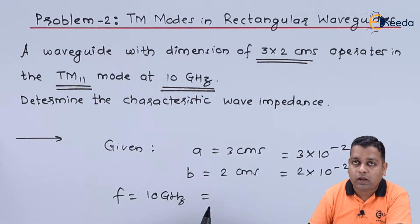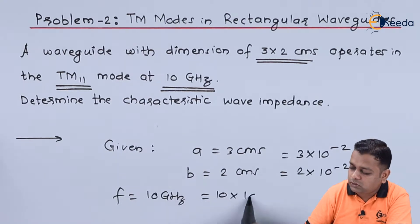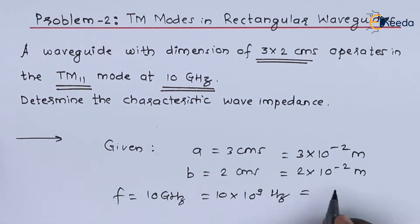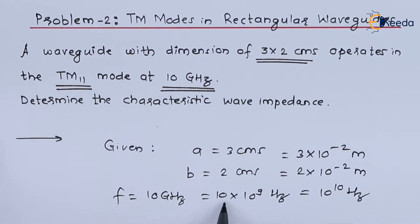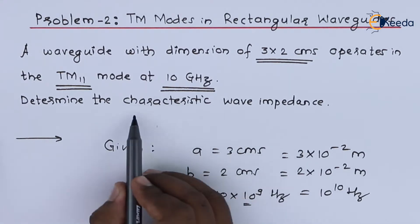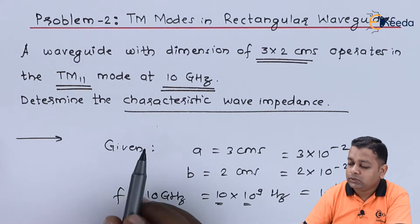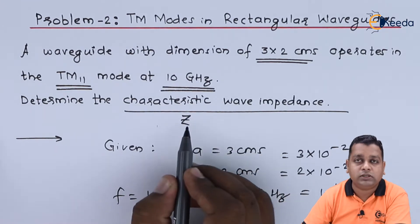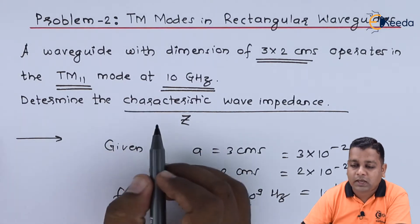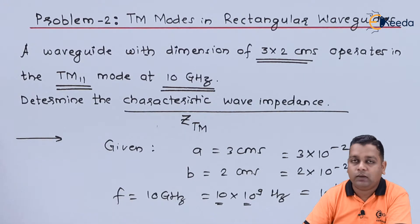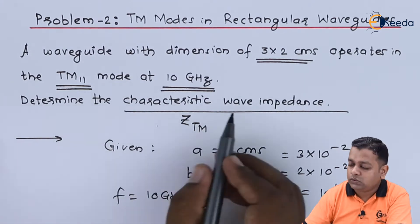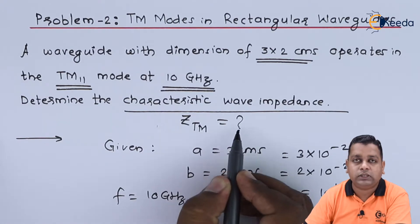Since giga represents 10⁹, f = 10 × 10⁹ = 10¹⁰ hertz. We are required to determine only one value: the characteristic wave impedance. For TM mode, this is denoted Z_TM, and that is the question in problem number two.